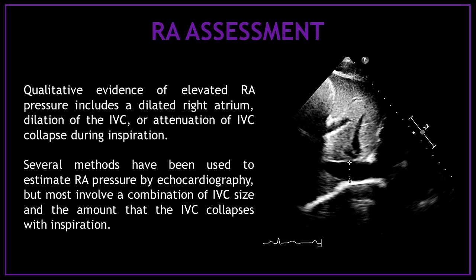Several methods have been used to estimate right atrial pressure by echocardiography, but most involve a combination of inferior vena cava size and the amount that the inferior vena cava collapses with inspiration.